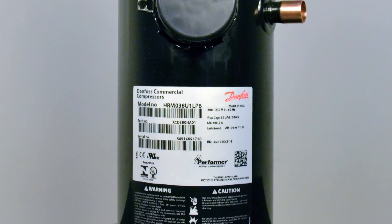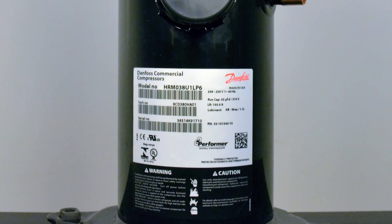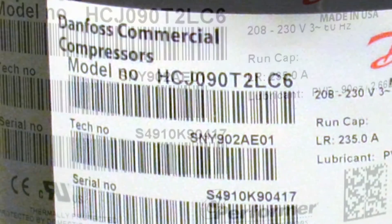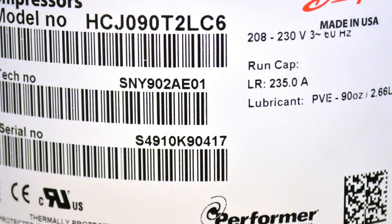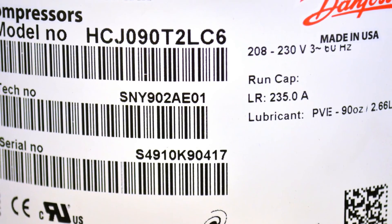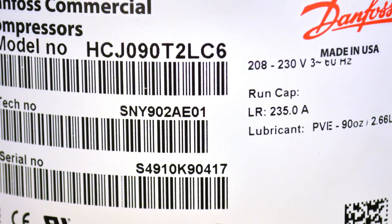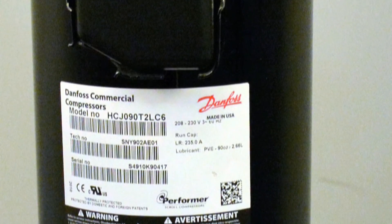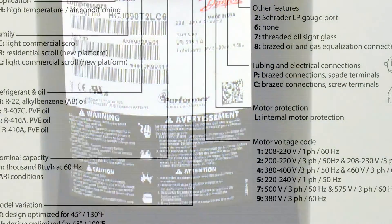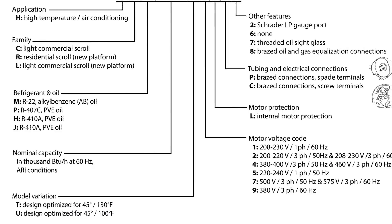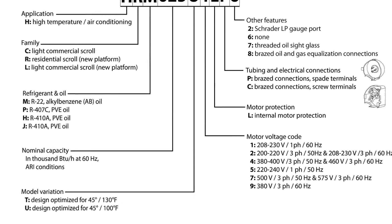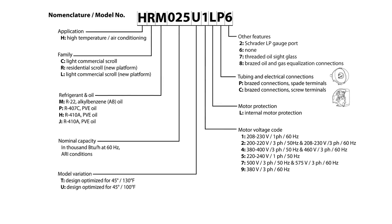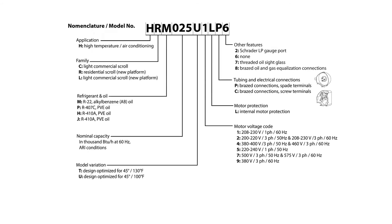Despite often looking like random letters and numbers, model numbers contain a lot of information about a particular product. To help the model number or nomenclature make better sense, this video will explain the nomenclature for the H series of Danfoss compressors. Nomenclature is used to describe the features that each compressor offers, signified by a letter or a number and by its location in the nomenclature.